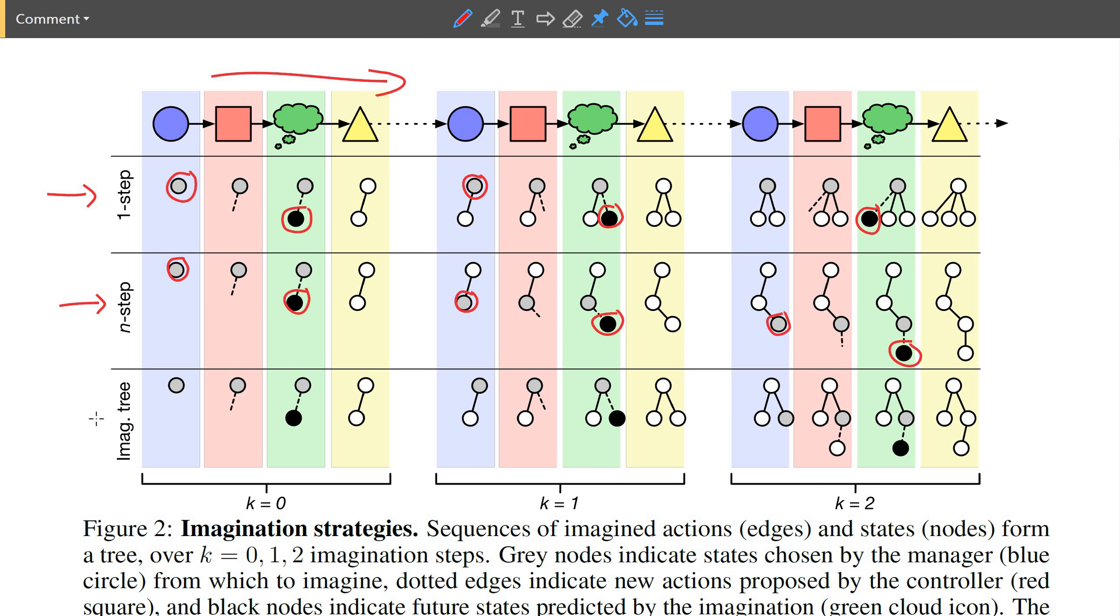And then lastly, this imagination tree strategy is basically the only one that's actually kind of a learned strategy where the manager can now propose any previously imagined or real-world states in order to imagine from. So you always have the current world state, which is the first node in the graph. You select it. Of course, at the beginning, you have no choice.